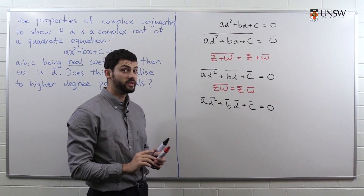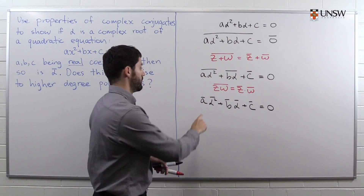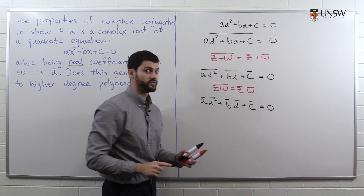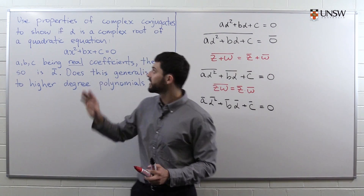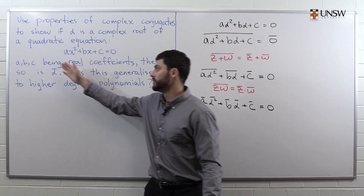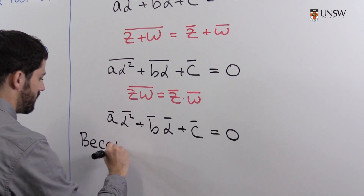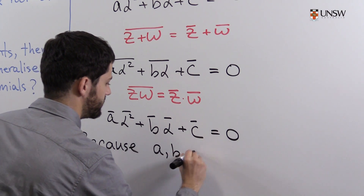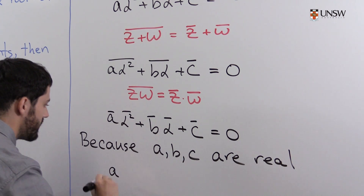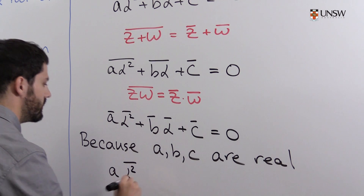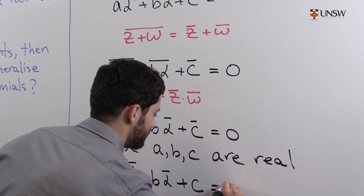Now comes probably the most important part: because a, b, and c are real, the conjugate of a, the conjugate of b, and the conjugate of c are just equal to a, b, and c. This is only true because they're real numbers. In fact, this result is false if we don't assume that a, b, and c are real. So because a, b, and c are real, we can now say that this simplifies to: a·conjugate(alpha squared) plus b·conjugate(alpha) plus c equals zero.